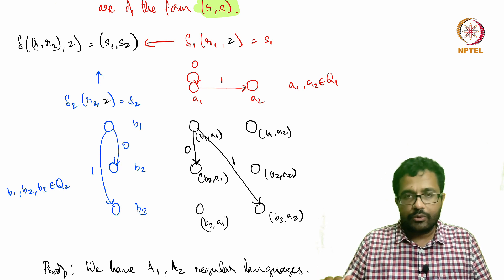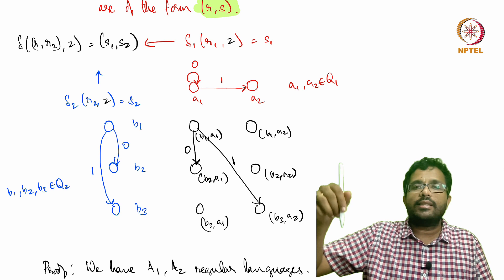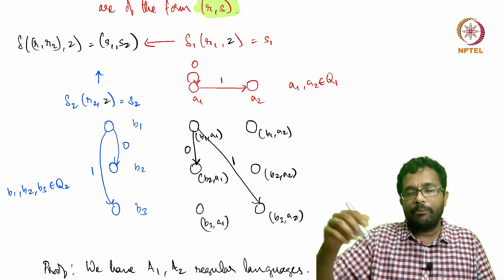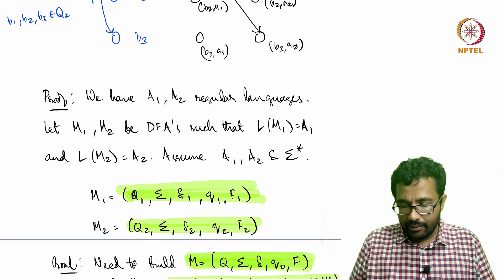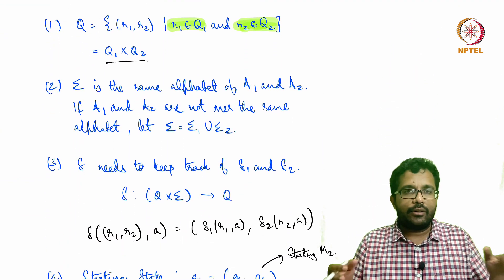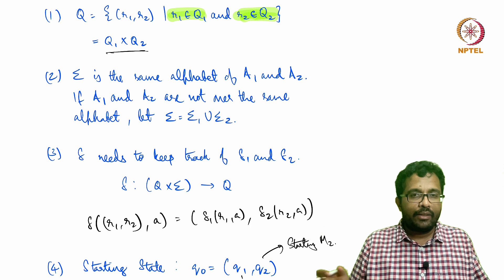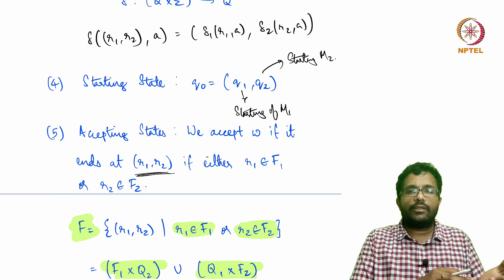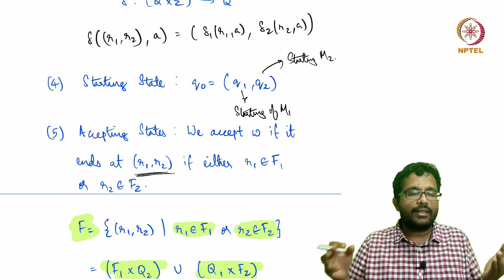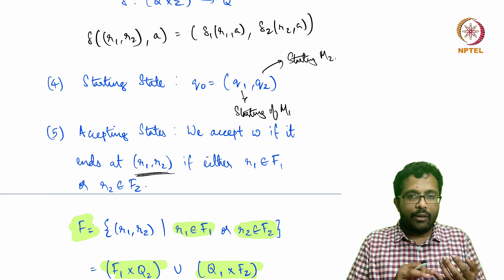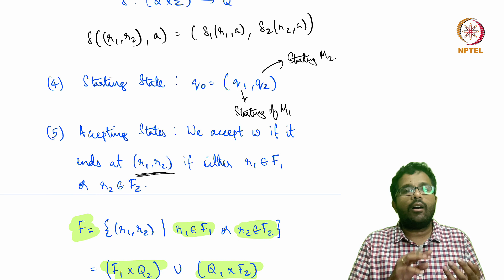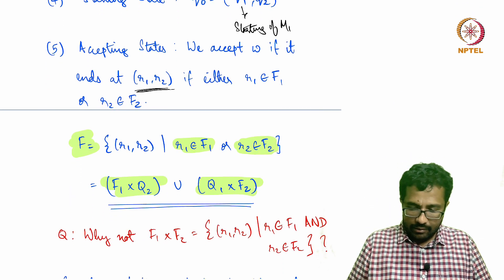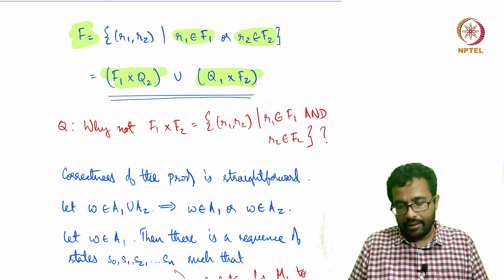By having this kind of grid structure, it faithfully reproduces the transitions as well. If you just look at which column it is in, you will see where M1 took the string to, and if you see which row it is in, you will see where M2 takes that string to. You have Q1 cross Q2 number of states, the starting state is the state which is combined by the starting state of M1 and starting state of M2, and accepting states are the set of states where either R1 is in the accepting state of M1 or R2 is in the accepting state of M2.